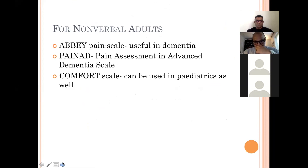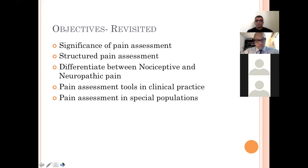For situations where communication with patients is not possible, there are pain scales specially designed for non-verbal patients. The Abbey Pain Scale is used for dementia; PAINAD — the Pain Assessment of Advanced Dementia scale — is another. The COMFORT scale can be used in both pediatric and adult populations. To revisit the objectives: we've covered the significance of pain assessment, structured pain assessment, differentiation between nociceptive and neuropathic pain, and pain tools for clinical and specialized populations.